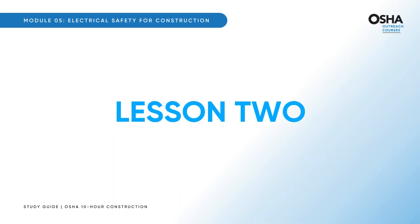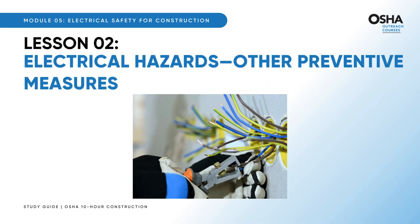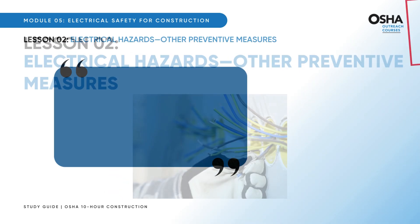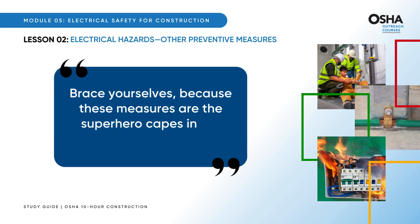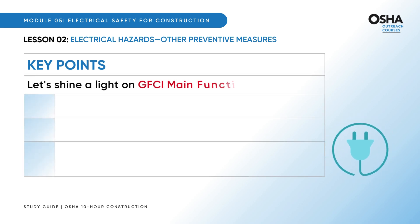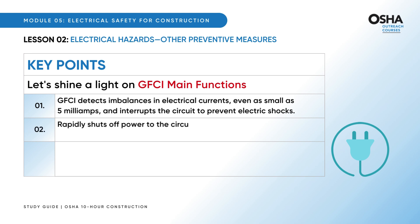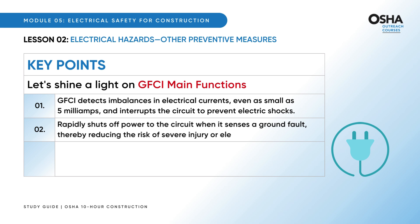Now let's move to the second lesson: Electrical Hazards and Other Preventive Measures. These measures are the superhero capes of electrical safety. GFCI detects imbalances in electrical currents — even as small as five milliamps — and interrupts the circuit to prevent electric shocks. It rapidly shuts off power to the circuit when it senses a ground fault, thereby reducing the risk of severe injury or electrocution.